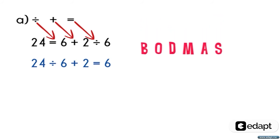Now by using BODMAS rule, the division replaces. So we will get 24 divided by 6 is equal to 4. Hence the equation becomes 4 plus 2 is equal to 6. So option A is correct.